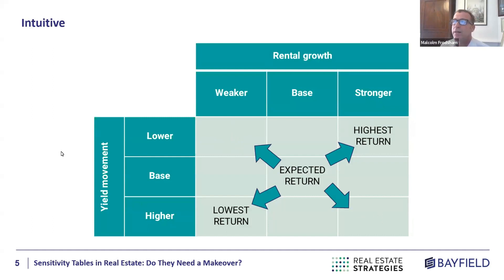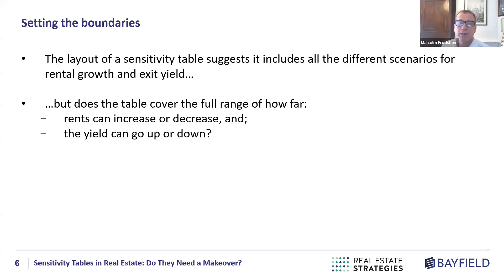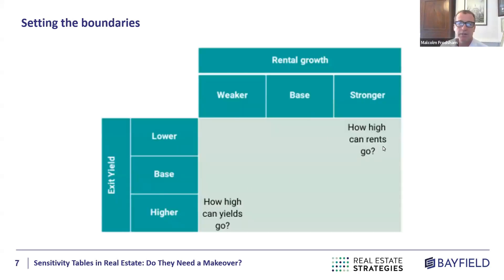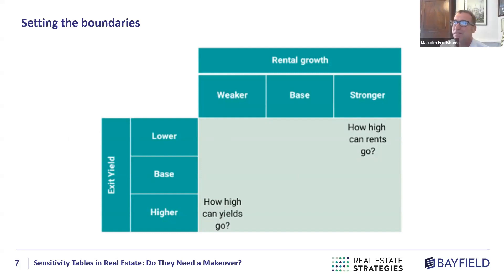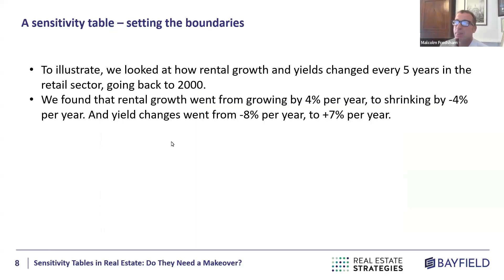The first consideration is: where do we get those boundaries? I use words like lower, higher, weaker, stronger — but where do those numbers actually come from? How do we know how high rents can go, or how far they can fall? Many people underwriting over the last few years probably didn't expect yields to rise as far as they have in the last 18 months.